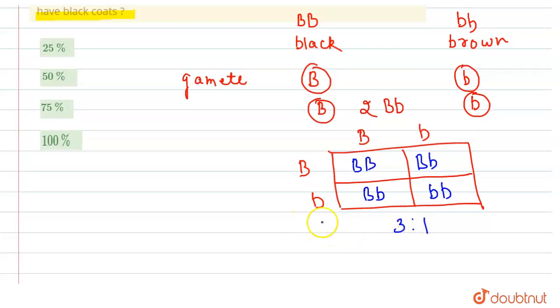The phenotypic ratio will be 3:1 because we can see that this is capital, this is capital, this is capital, and all of them will be black. One is bb, which becomes brown. So if we consider it all as 100%, out of 100%, one-fourth is brown, which means 25% will be brown and 75%